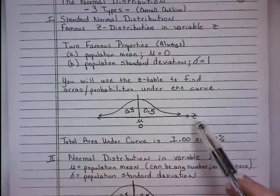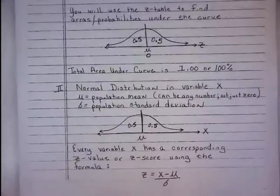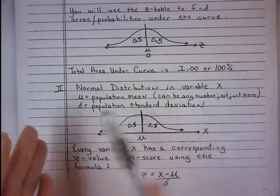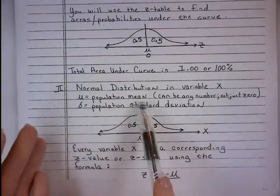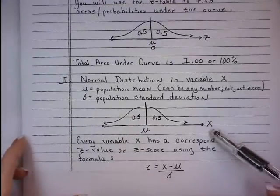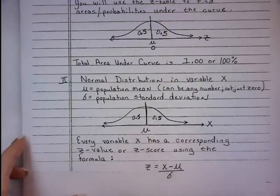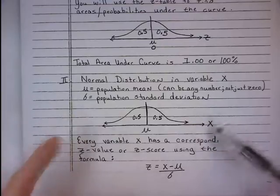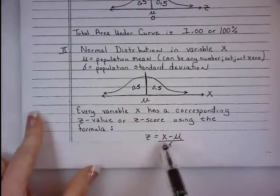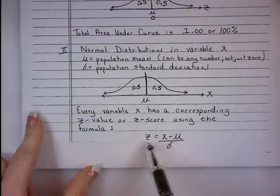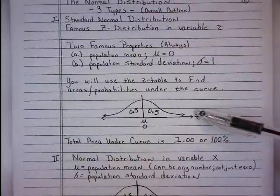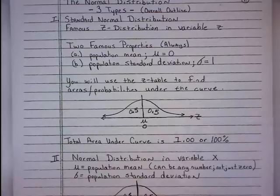I'll be showing you how to use the famous two-page Z-table. Once we master the Z-table and finding area under the curve, we'll move to word problems — those probability questions — involving normal distributions in variable X, where the population mean doesn't have to be zero and the standard deviation doesn't have to be one. You have an X-axis with the mean at the center and 50% of area on either side. We'll start in X, then go to Z using the Z-score formula: z = (x − μ) / σ. Once in Z, we use the Z-table to find area. Area and probability are the same.